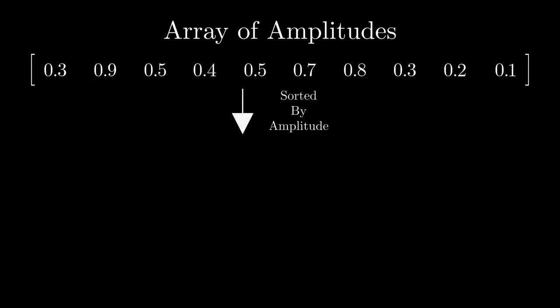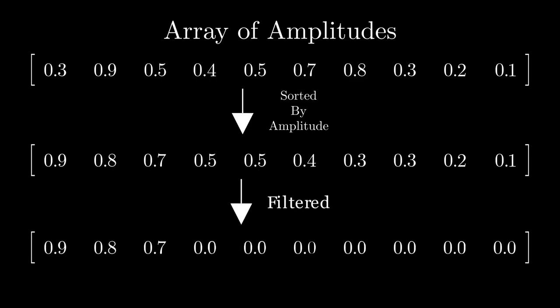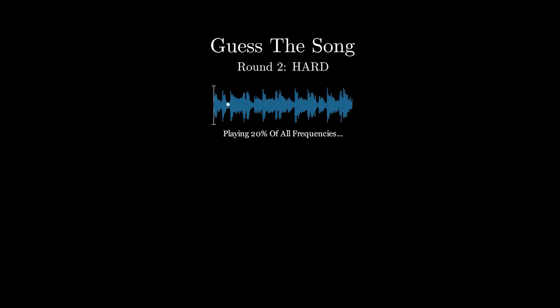Since the frequencies whose amplitudes are the largest have the largest influence on the overall shape of the original wave, we sort the data by the largest amplitude, and set the amplitudes of the frequencies we don't want to use to zero. In this manner, we can start with a single frequency, and then add batches of the most impactful frequencies each round to progressively make the wave look more and more like the original. This makes the song sound more and more like the real song until it's finally revealed.